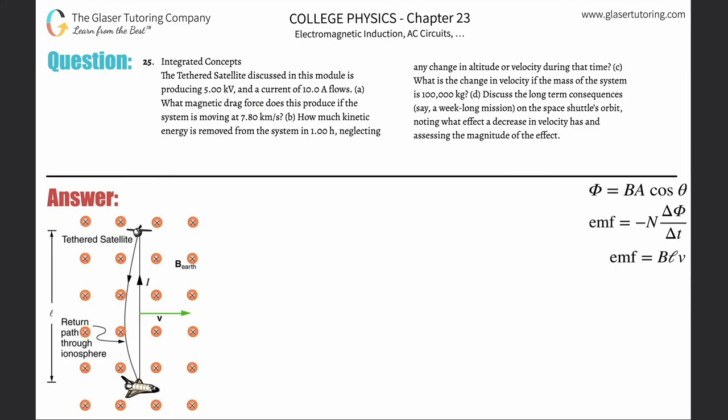Number 25, integrated concepts. The tethered satellite discussed in this module is producing five kilovolts and a current of 10 amps flows. Letter a: what magnetic drag force does this produce if the system is moving at 7.8 kilometers per second? So just take a look — we discussed the nature of this problem in a couple problems prior.